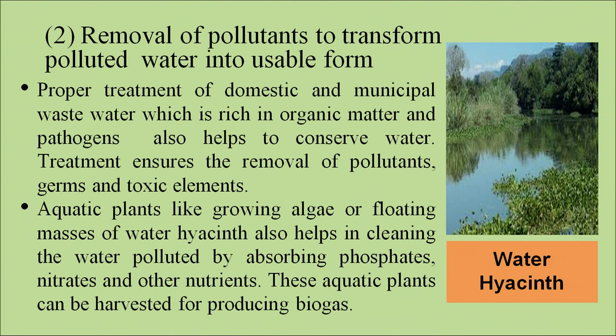Removal of pollutants to transform polluted water into a usable form: proper treatment of domestic and municipal wastewater, which is rich in organic matter and pathogens, helps conserve water. Thorough water treatment ensures removal of pollution, germs, and toxic elements. Aquatic plants like water hyacinth also help — they absorb pollutants like phosphates, thereby making the water usable, and can be harvested later for producing biogas.